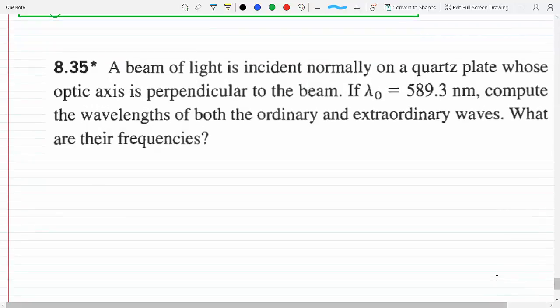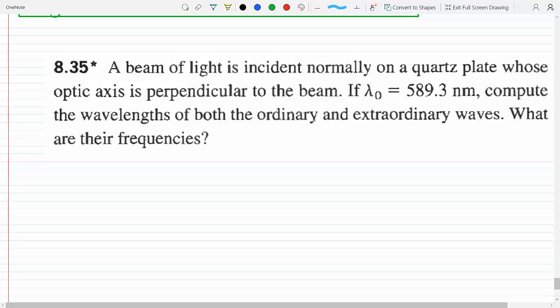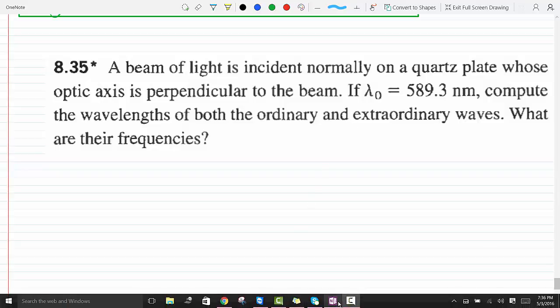A beam of light is incident normally on a quartz plate whose optic axis is perpendicular to the beam. If λ₀ = 589.3 nm when n equals one, compute the wavelengths of both the ordinary and the extraordinary waves.